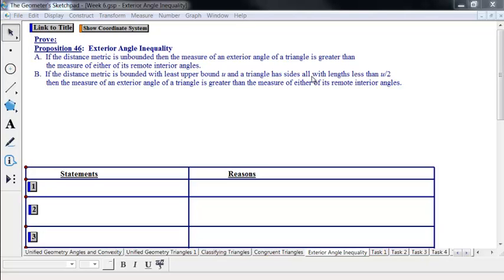It says that if the distance metric is unbounded, then the measure of an exterior angle of the triangle is greater than the measure of either of its remote interior angles. And this is also true if the distance metric is bounded with least upper bound u, and the triangle has all sides of lengths less than u over 2.